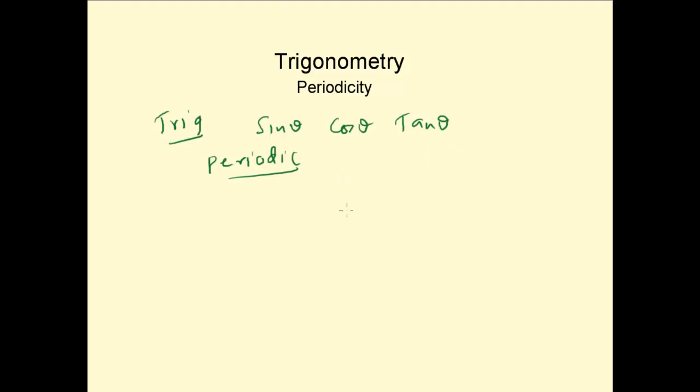So for example, sin θ. If you plot this, it's similar to something like this. So we know that this part of the curve, starting from here to here, repeats itself on both sides. From here to here, it's the same.